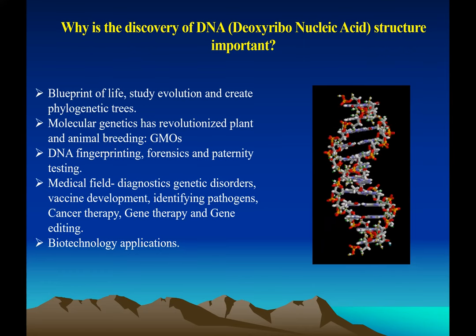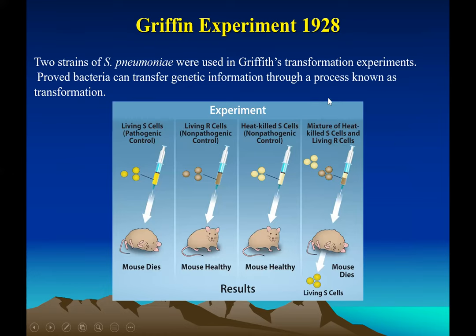Here's a very important experiment involving Streptococcus pneumoniae bacteria. The S strain is pathogenic — if you infect a mouse with the S strain, the mouse will die. The R strain is non-pathogenic and will not cause disease. However, if you heat-kill the S strain, mix it with the R strain, and then inject the mouse, it died. This proved the genetic material transferred from the pathogenic to the non-pathogenic strain — a phenomenon called transformation. This is the Griffith experiment.